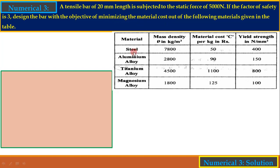We have four options of material: steel, aluminum alloy, titanium alloy, and magnesium alloy. The corresponding densities are given, the material cost per kg is also given, and the yield strength in Newton per mm² is given for all four materials. So first of all we will write the given data.